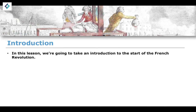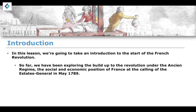We're going to take an introduction to the start of the French Revolution. So far, we've been exploring the build-up to the revolution under the Ancien Régime, under the reign of Louis XVI — looking at things like the social and economic position of France, as well as the attempts to not call the Estates General in May 1789. So all of the attempts involving Louis and the Paris Parlement, Louis and the Assembly of Nobles, and Louis's various financial advisors — spoiler alert: they weren't particularly successful.